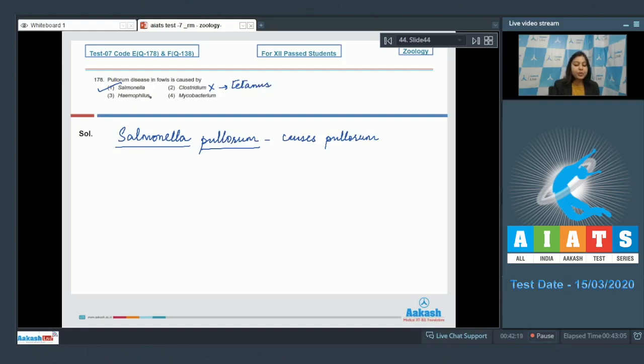Number three, Hemophilus is also incorrect as Hemophilus causes pneumonia. Number four, Mycobacterium is also incorrect as different species of Mycobacterium cause tuberculosis and leprosy. So the correct answer becomes option number one.